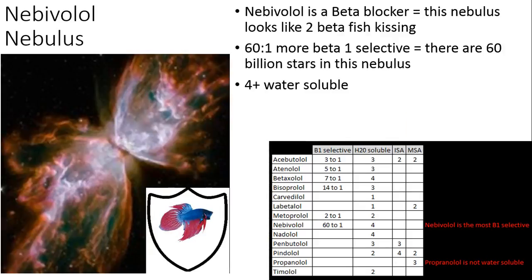Next we have nebivolol. 'Nebiv' kind of sounds like nebulous to me, so this is a nebula. If you really squint and use your imagination, a big nebula kind of looks like two betta fish kissing — so that'll help you remember it's a beta blocker. This one is 60-to-1 more beta-1 selective, which is extremely way more beta-selective than all the others. It's also four-plus water soluble, and it's definitely the most beta-1 selective of the group — a very unique property.